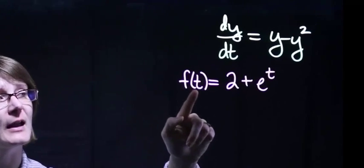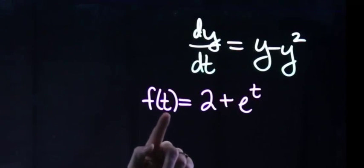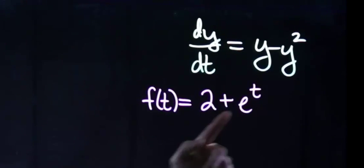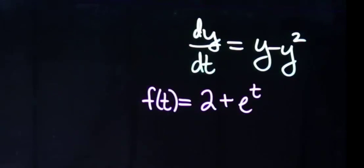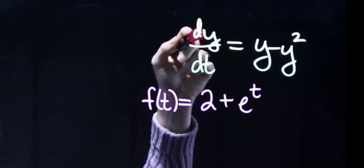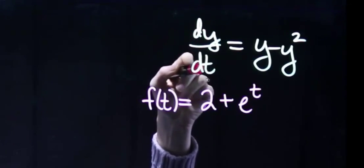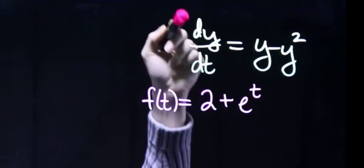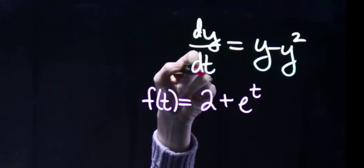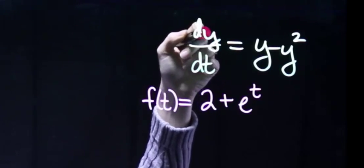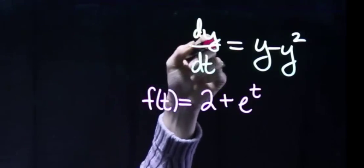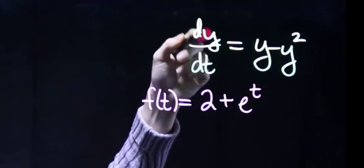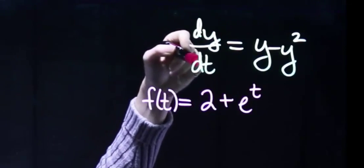The first function we're going to look at is f equals 2 plus e to the t. Looking back at our differential equation, the notation dy/dt means take the derivative of your function with respect to t. The fact that this is a y and this is an f doesn't matter — it just means take the derivative.